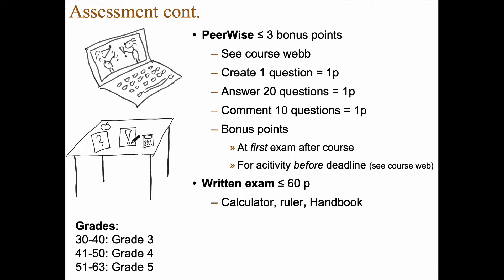And then we have a written exam which gives you up to 60 points. The only things allowed there is a calculator, a ruler and the handbook that we have created that I'm editor of. And the grades, well, if you have 30 to 40 points, you get grade three. If you have 41 to 50, you get grade four, and 51 to 63, you get grade five.